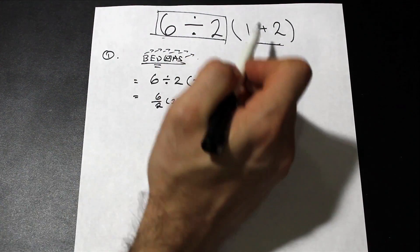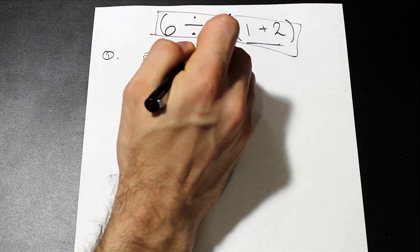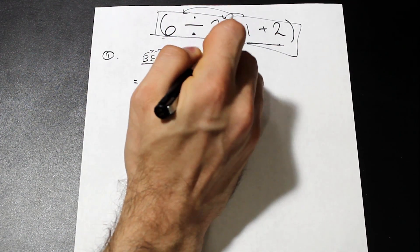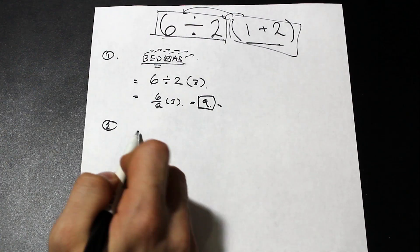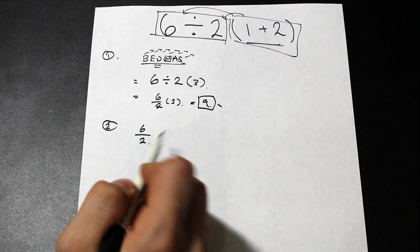Now the confusion comes in: is this term multiplied by the top value, the numerator, or the denominator? That's the question, and that's where the tricky part comes in.